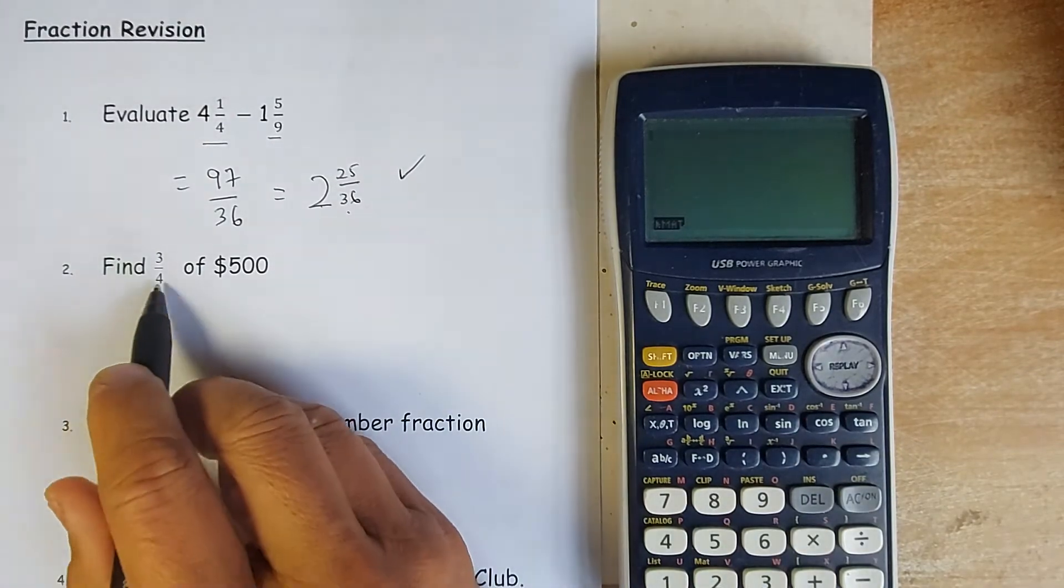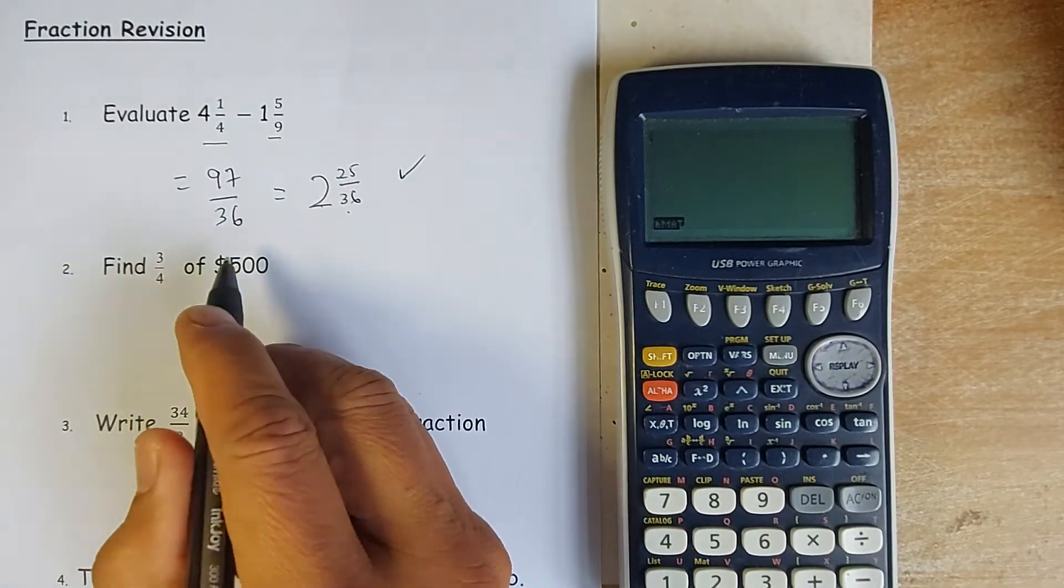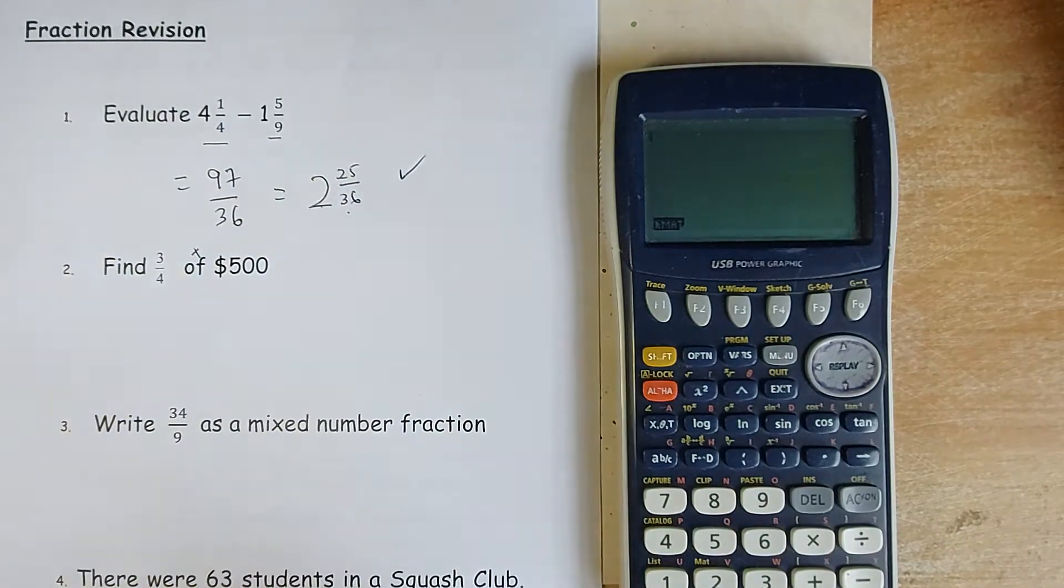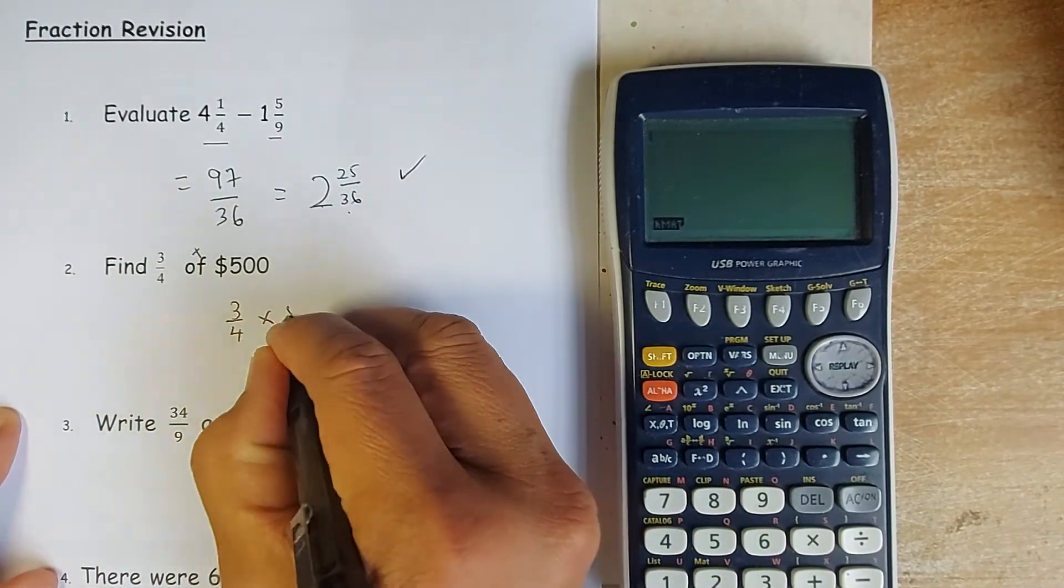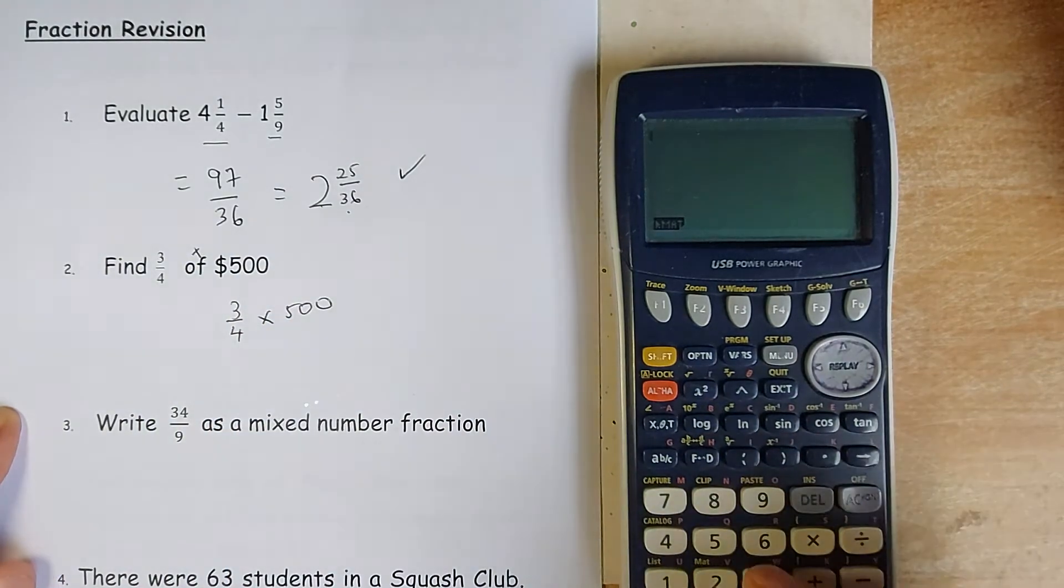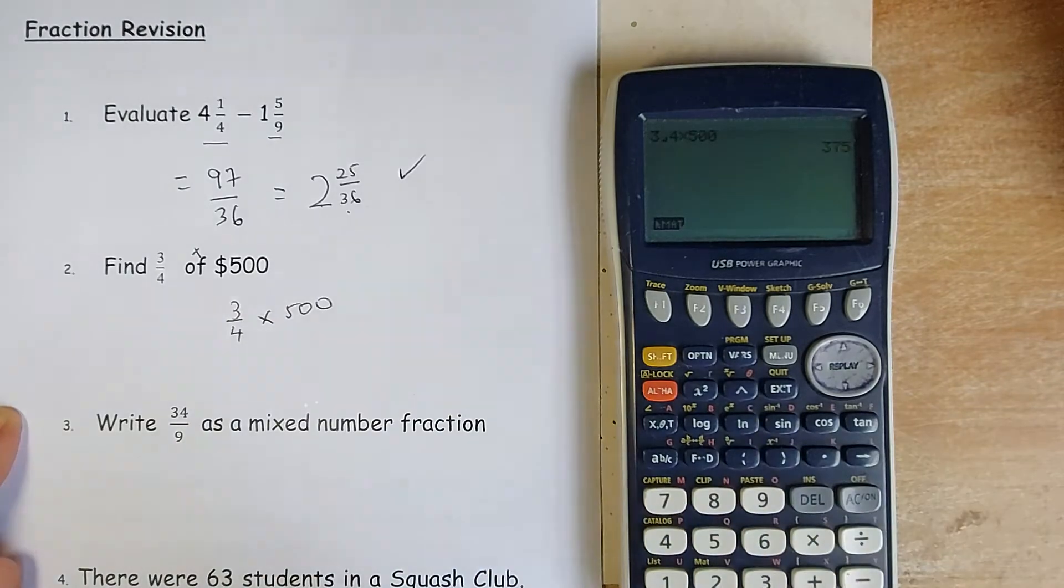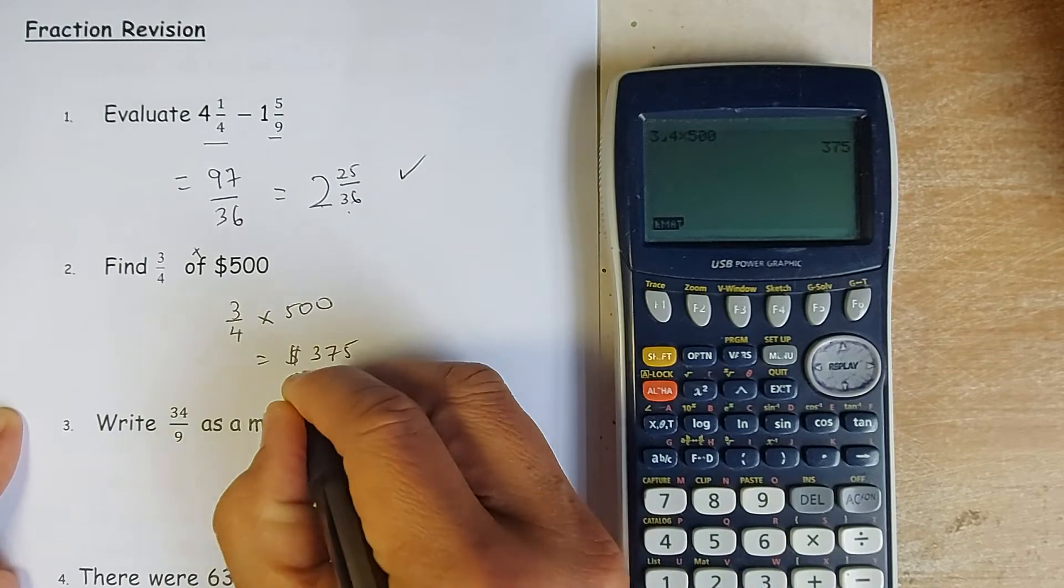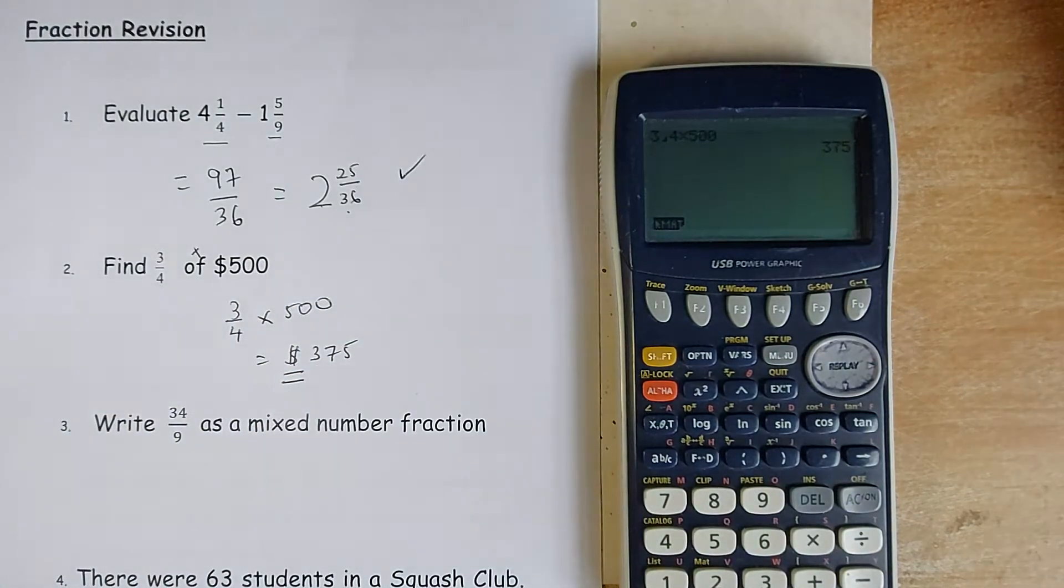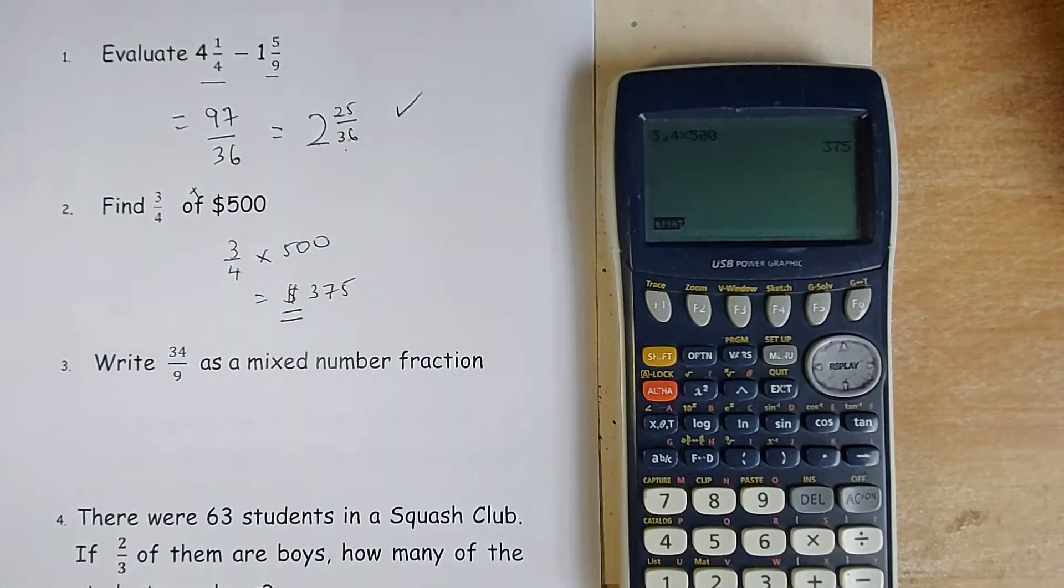Next one. Find 3 quarter of $500. In mathematics, 'of' means multiply. So the trick is that you put 3 quarter multiply by 500. Put in your calculator. So 3 quarter multiply by 500, and the answer is going to be $375. Don't forget your dollar sign.